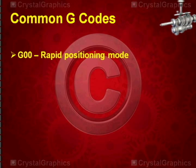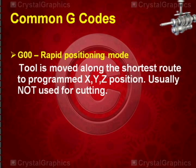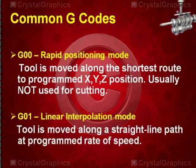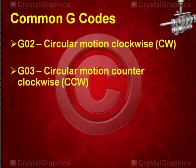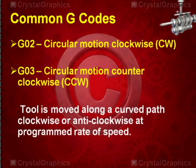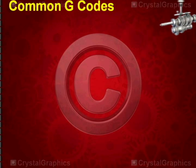The first G code is G00, known as rapid positioning mode. Tool is moved along the shortest route to programmed XYZ position, usually not used for cutting. G01 is linear interpolation mode, where tool is moved along a straight line path at programmed rate of speed. G02 is circular motion clockwise. G03 is circular motion counterclockwise.